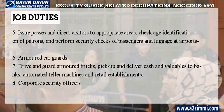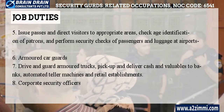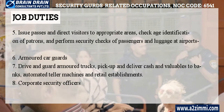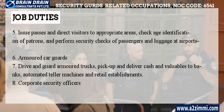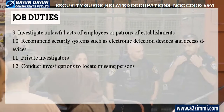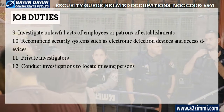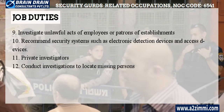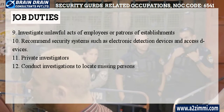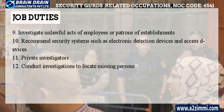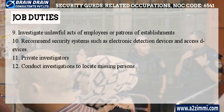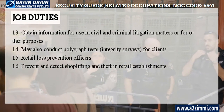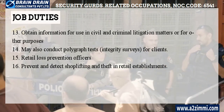Armored car guards: drive and guard armored trucks, pick up and deliver cash and valuables to banks, automated teller machines and retail establishments. Corporate security officers: investigate unlawful acts of employees or patrons of establishments, and recommend security systems such as electronic detection devices and access devices. Private investigators: conduct investigations to locate missing persons, and obtain information for use in civil and criminal litigation matters or for other purposes.